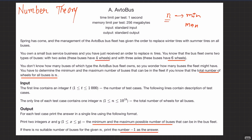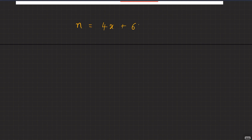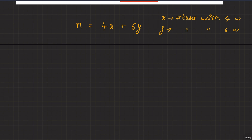To approach this, we need all N wheels to be formed using buses with four or six wheels. So N should equal 4x + 6y, where x is the number of buses with four wheels and y is the number of buses with six wheels.